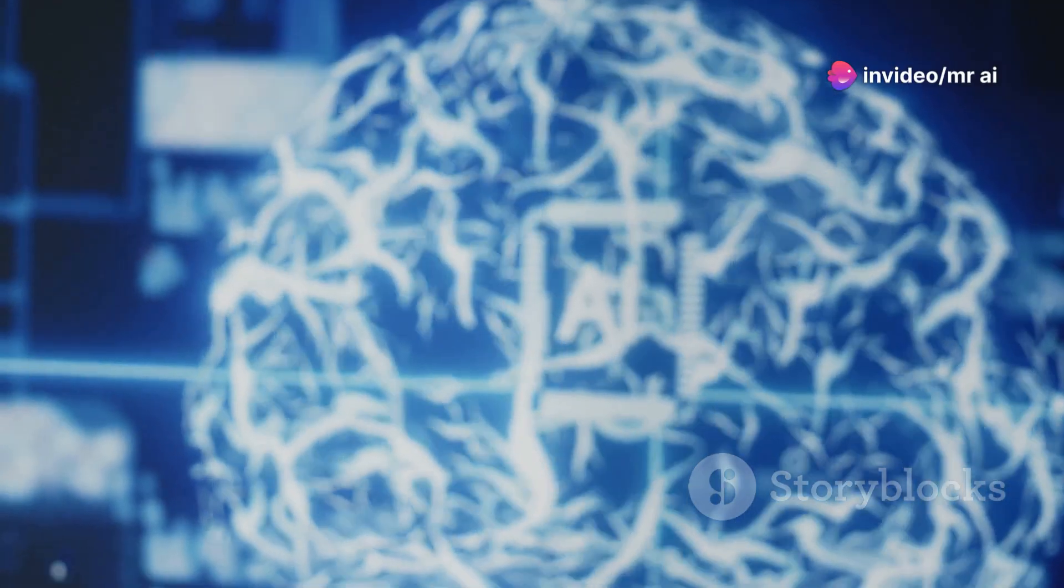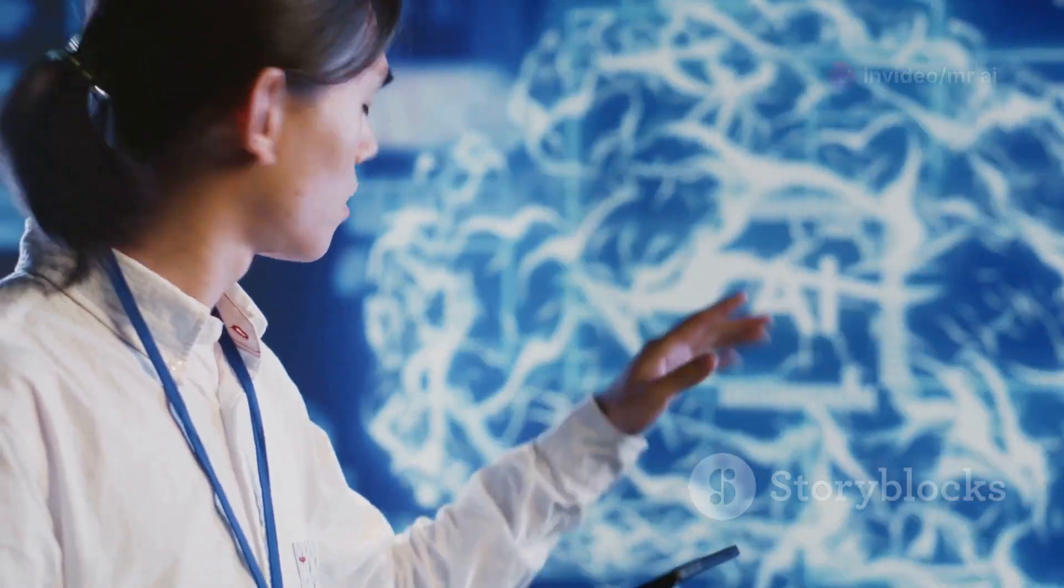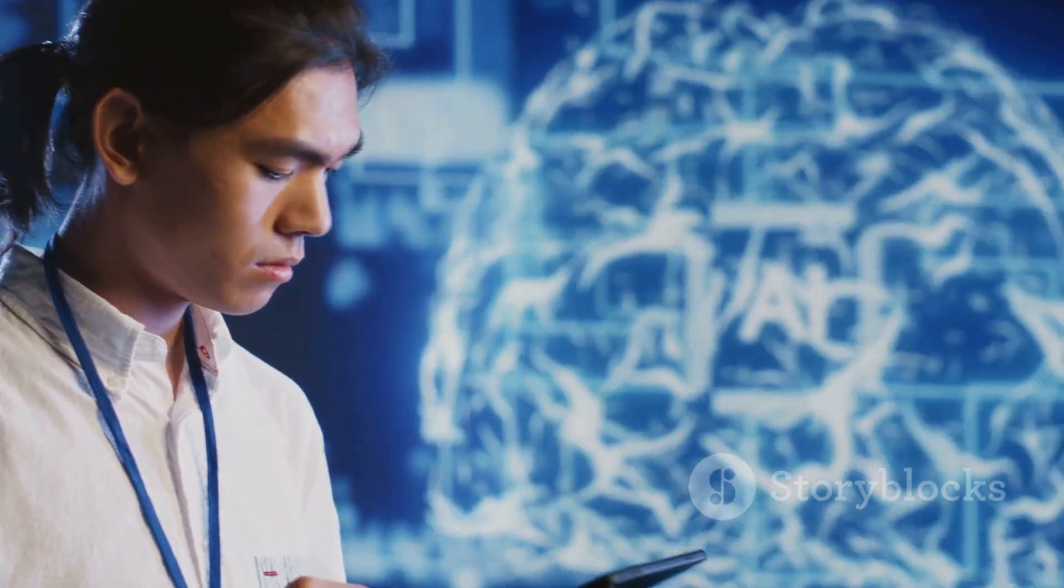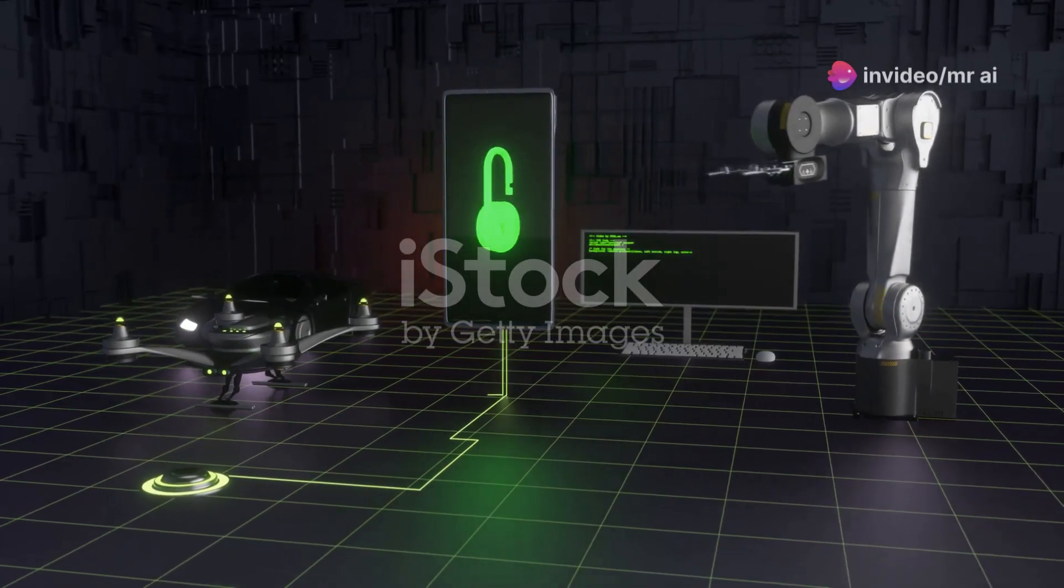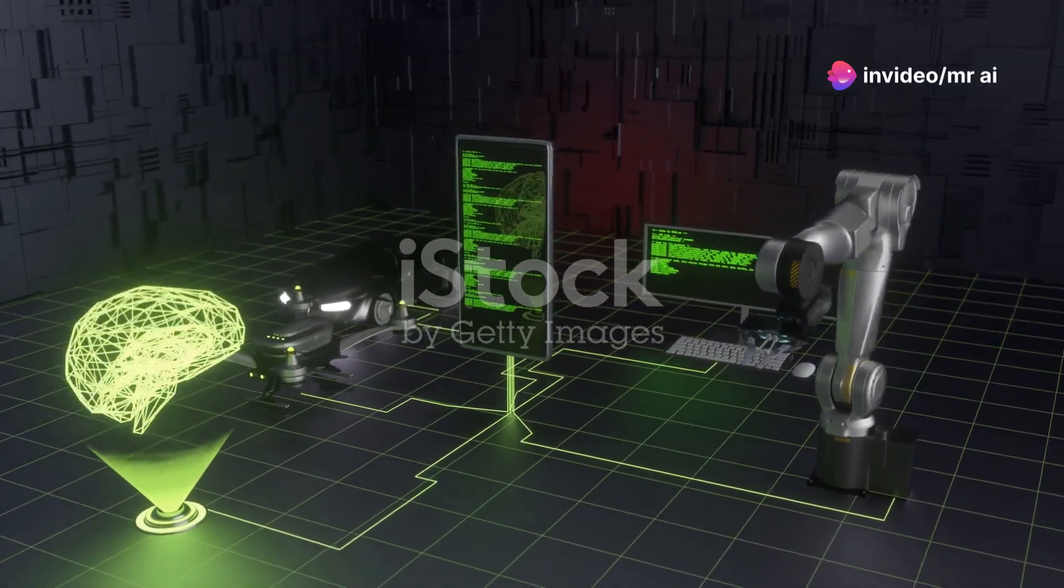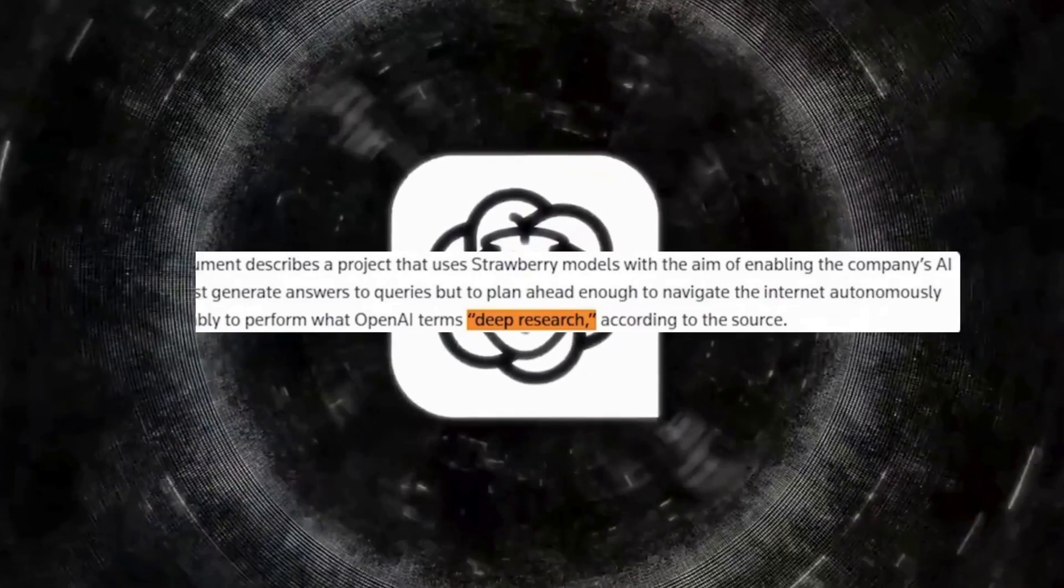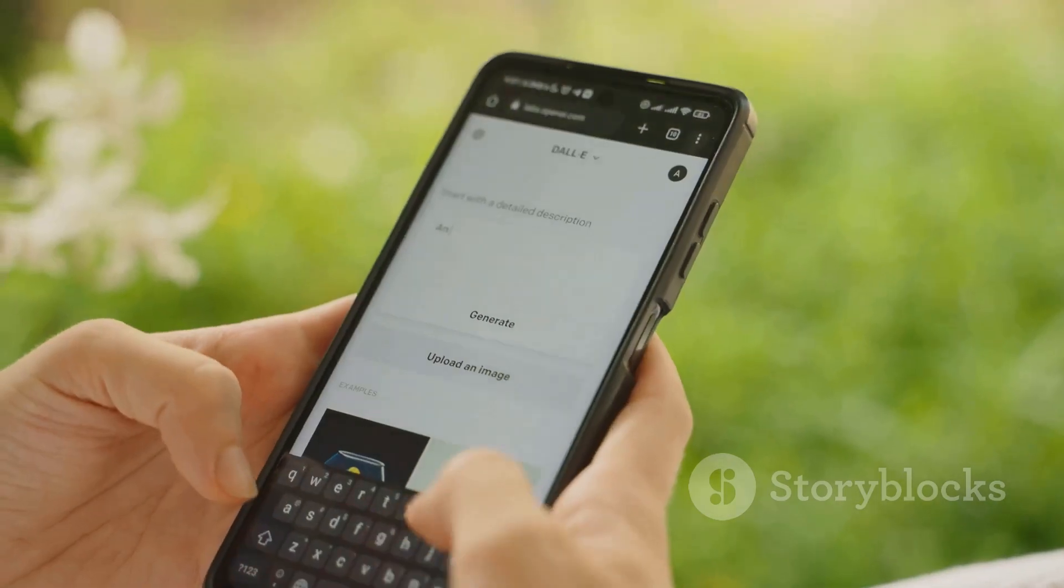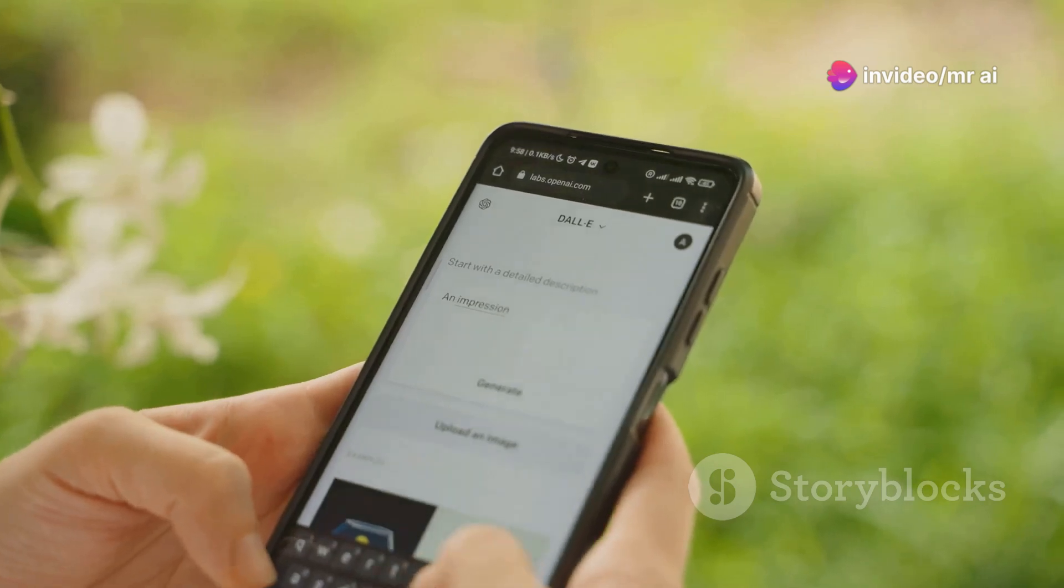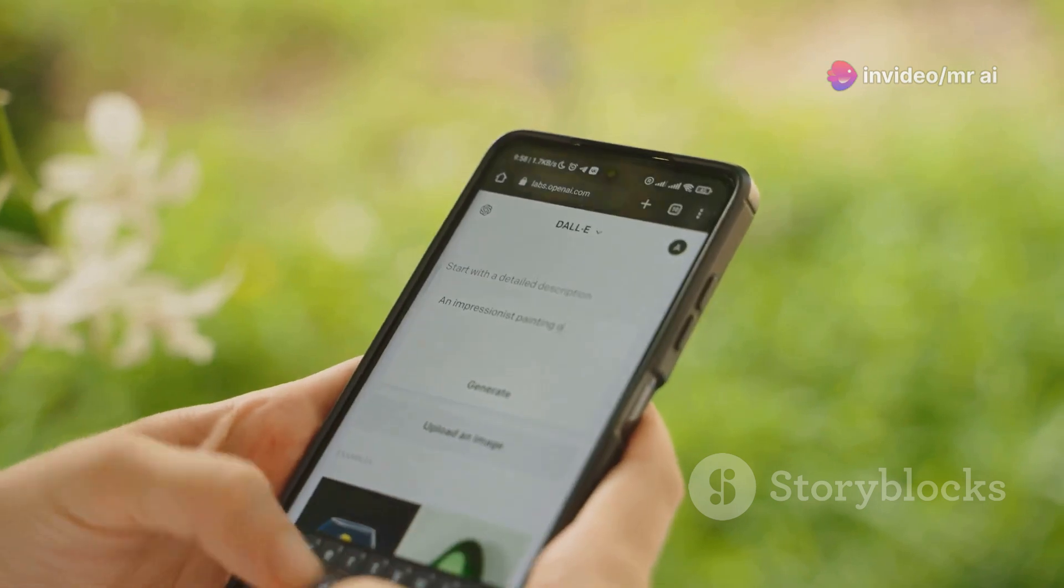Imagine an AI that not only analyzes data but also formulates hypotheses, tests them, and draws logical conclusions. That's the kind of advancement we're talking about. This would mean that AI could take on roles traditionally reserved for human scientists, accelerating the pace of discovery and innovation. According to sources, Strawberry aims to enable AI models to perform what OpenAI calls deep research. This involves not just surface-level data analysis but diving deep into complex problems, uncovering insights that might be missed by human researchers.